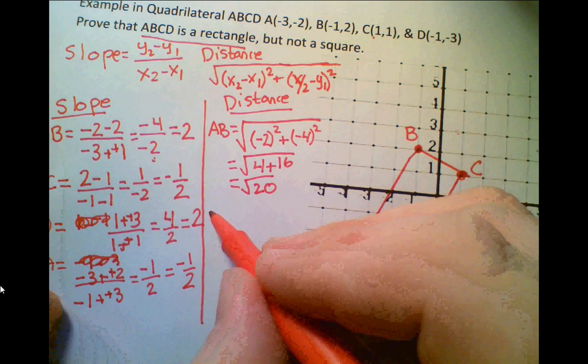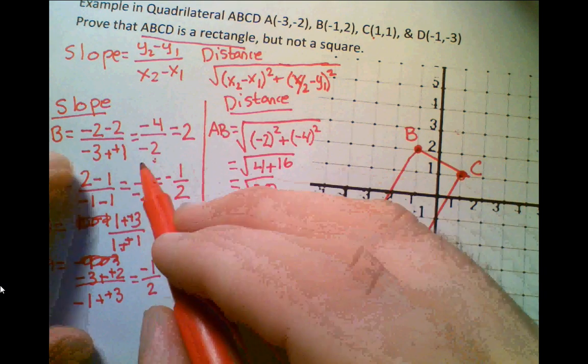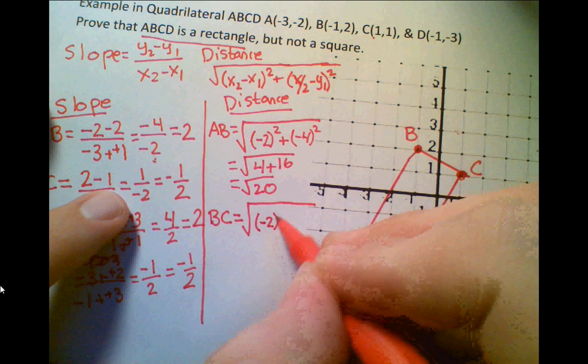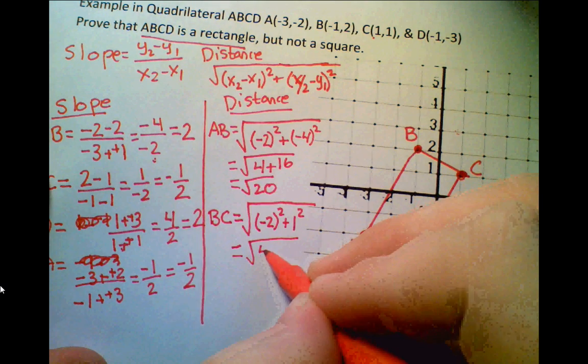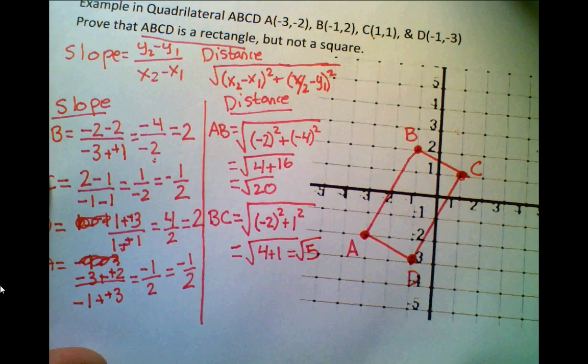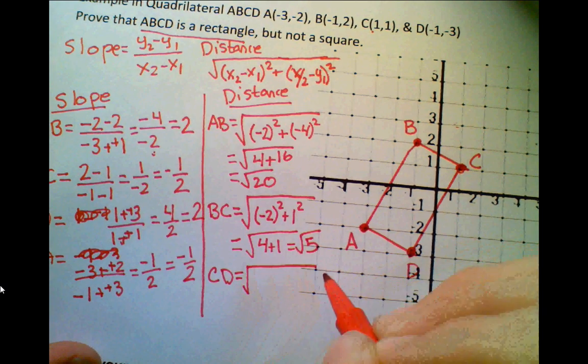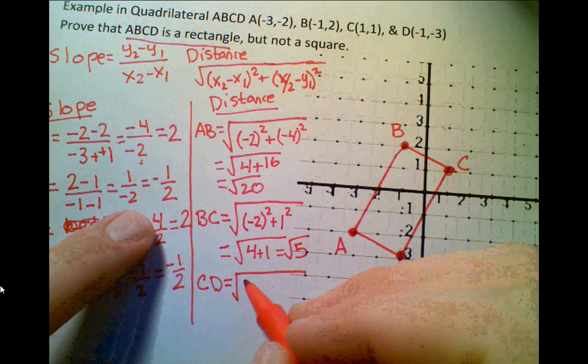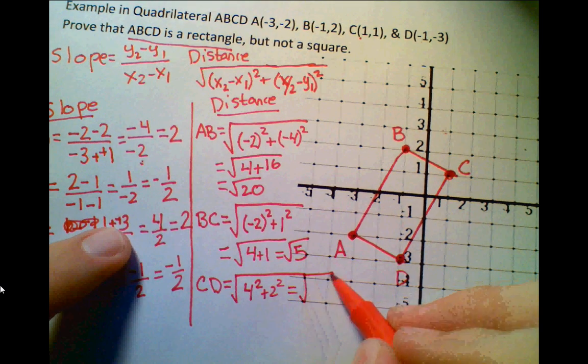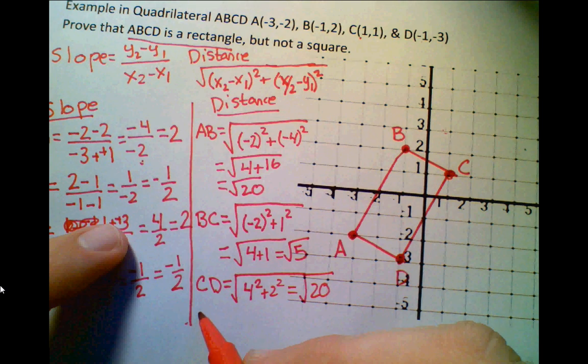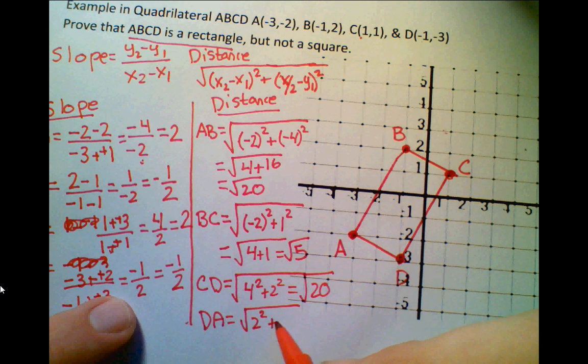Now, let's take a look at BC. BC is going to be -2 squared plus 1 squared. And that's going to be equal to radical 4 plus 1, which equals radical 5. Now, let's take a look at CD. CD is going to be equal to 4 squared plus 2 squared, which equals radical 16 plus radical 4, which equals radical 20. And then finally, DA is equal to radical 2 squared plus -1 squared, which equals radical 5.